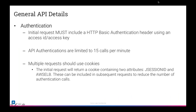Let's talk about some general API details. These requirements apply to all of our APIs. Authentication must be included as an HTTP basic header using an access ID and access key. You can create an access ID and access key from the UI and then build an HTTP basic header using that information. Authentication calls are limited to 15 calls per minute. To reduce that number, you can use the cookies that come back. When you have multiple requests firing off, use the cookies from the first call — they include a J-Session-ID and AWS ELB — to reduce the number of authentication calls you make.